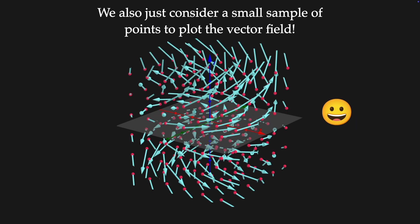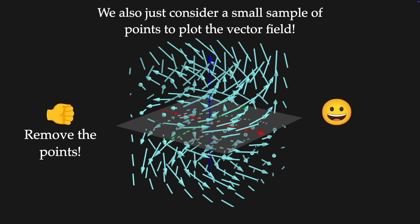So it is better to have, for example, a small regular grid of points. We can also remove the initial points and keep only the arrows.